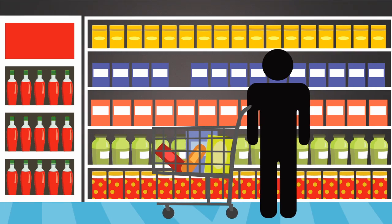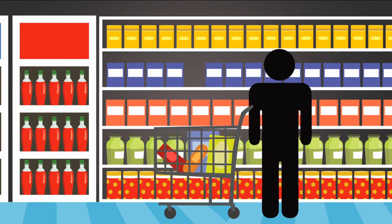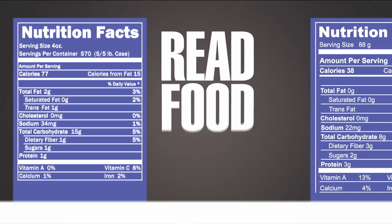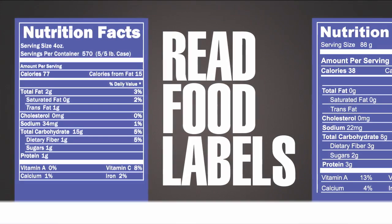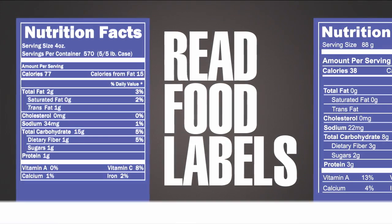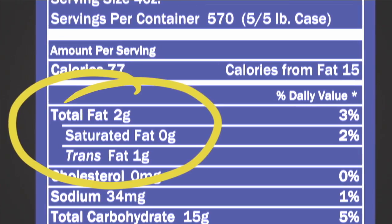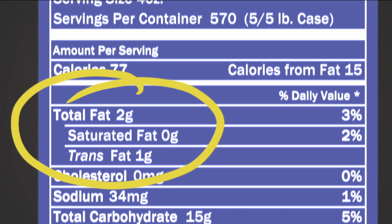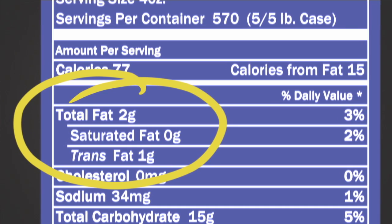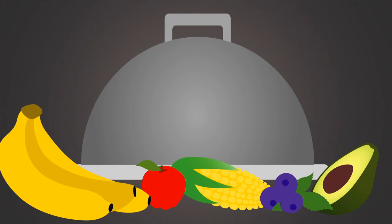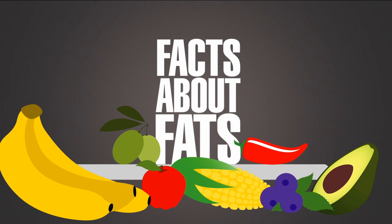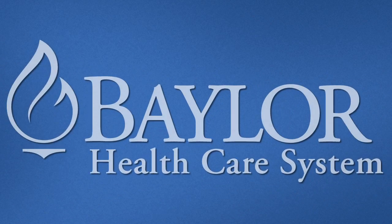So how do you avoid the bad and get the good? Your best bet: read food ingredient labels. They contain valuable information that will help you make better decisions about what you eat. Maintaining a healthy lifestyle can be easy if you know your facts about fats.